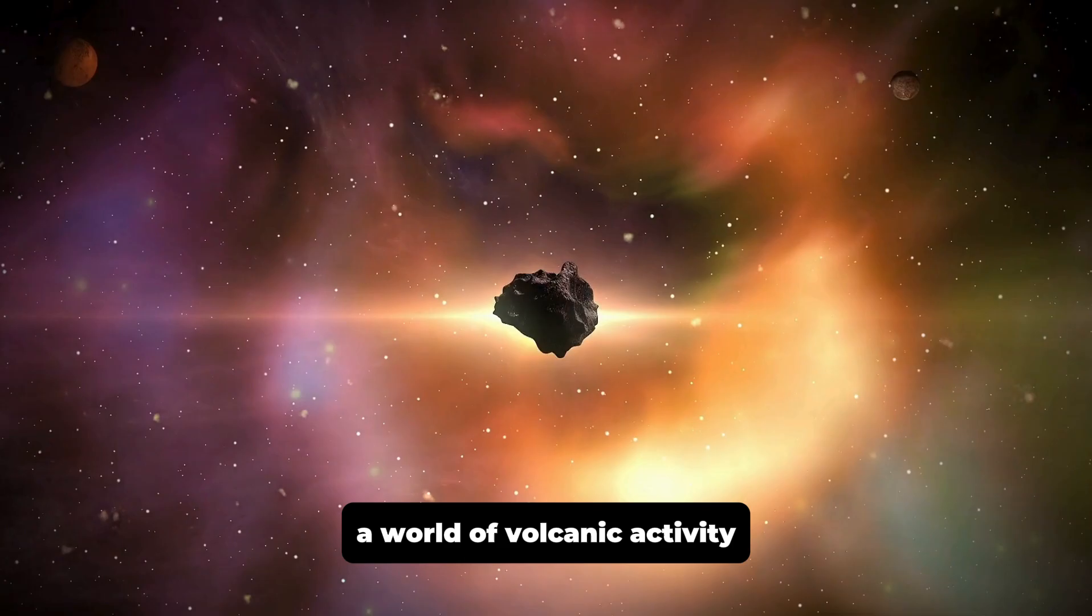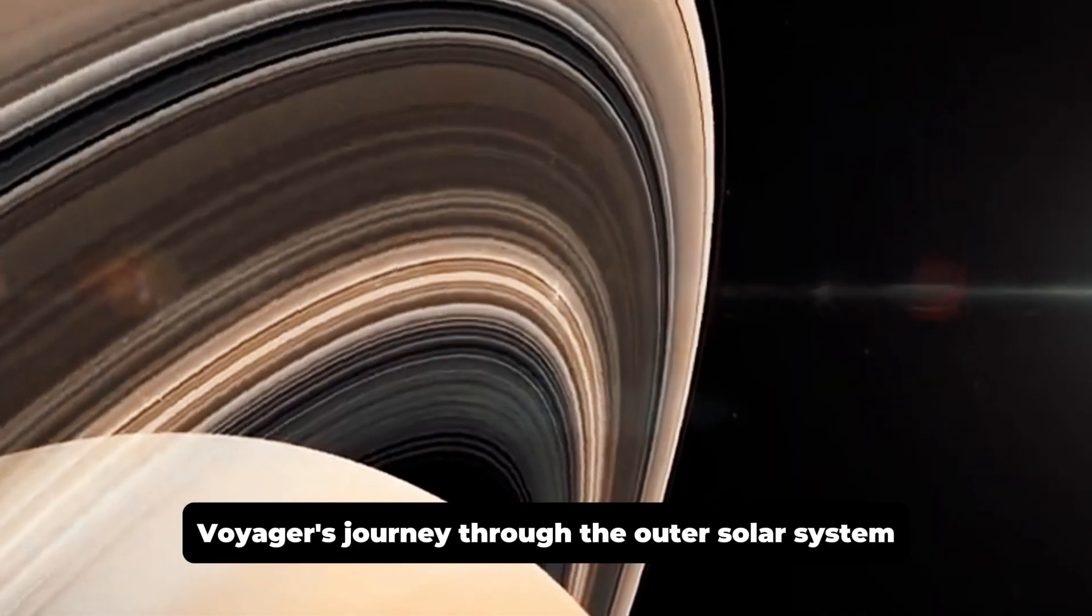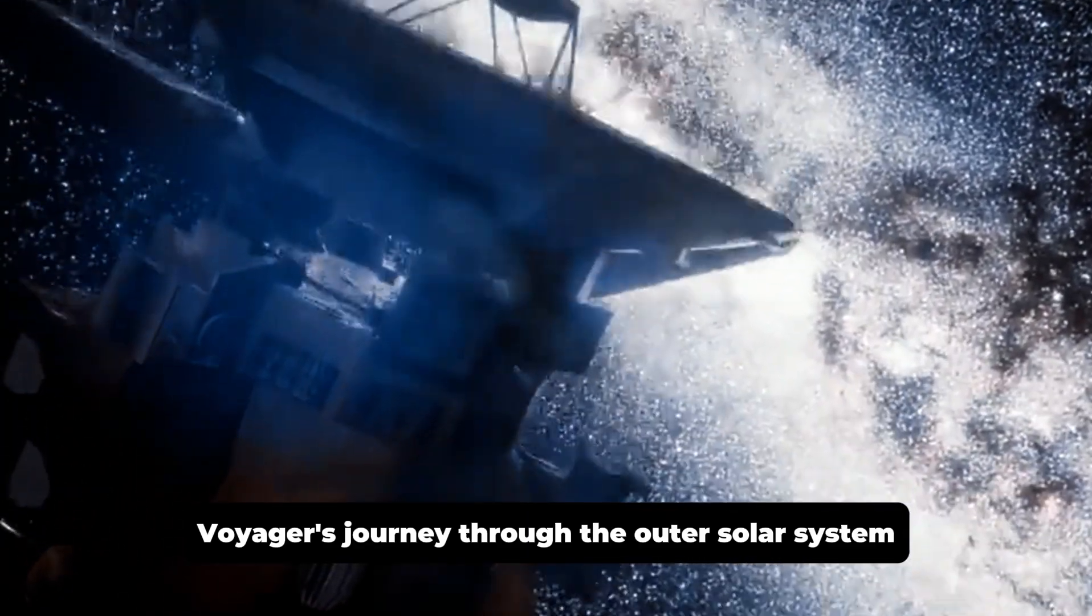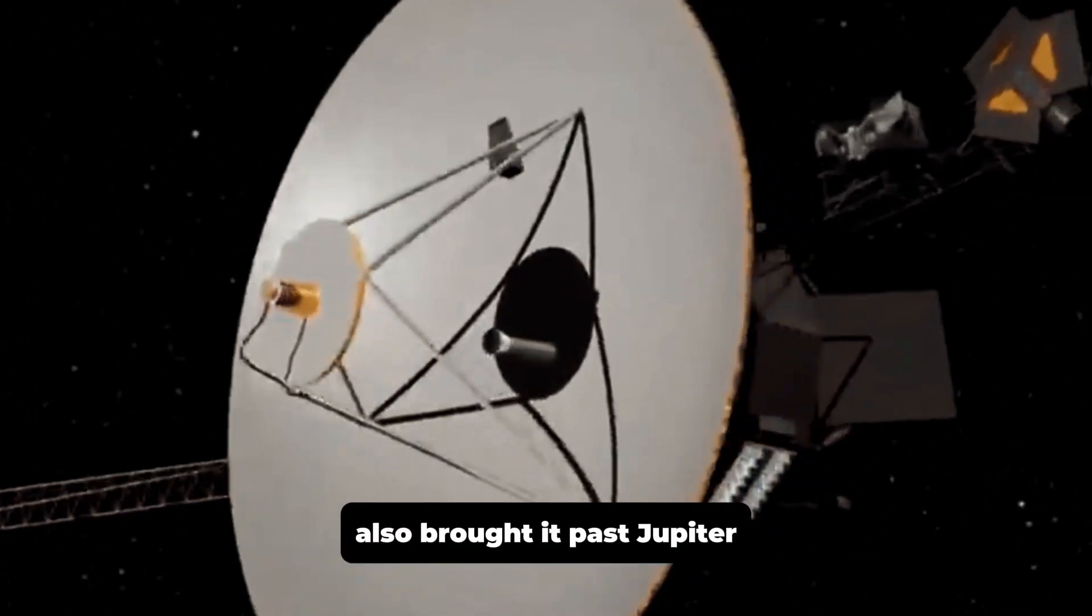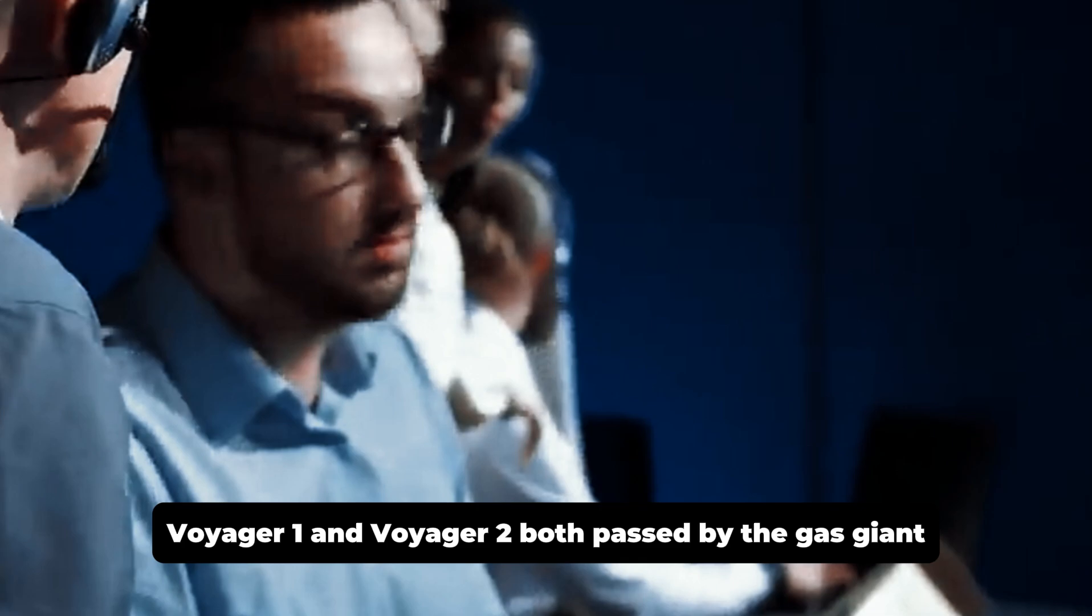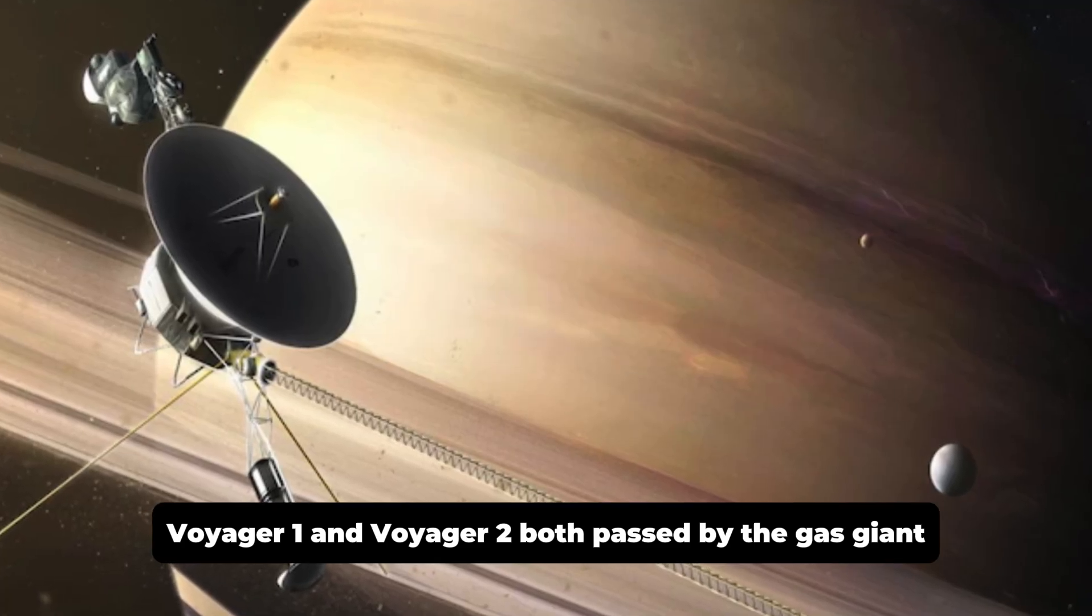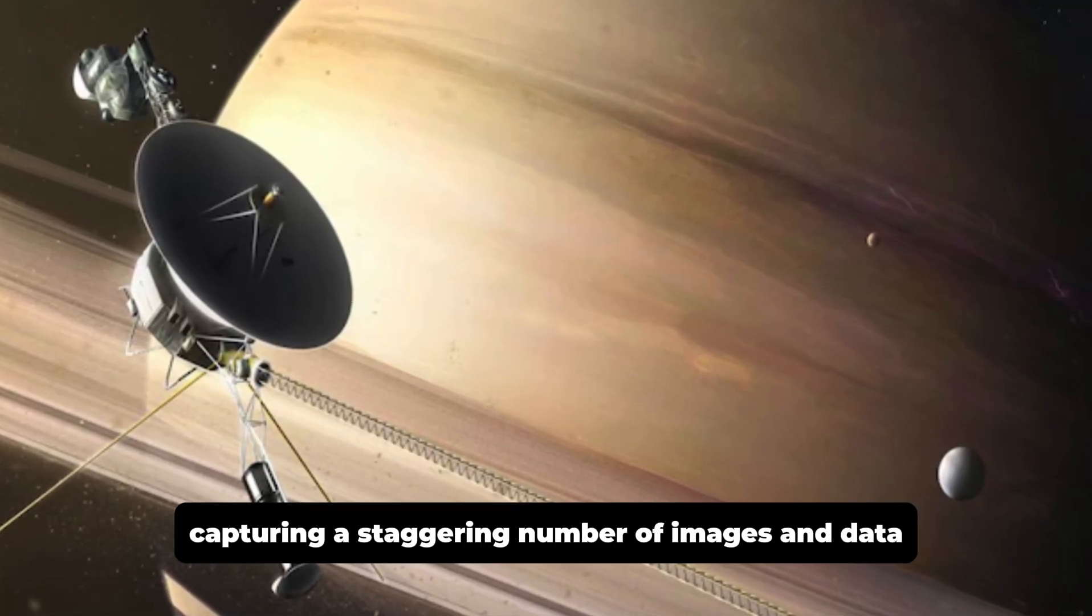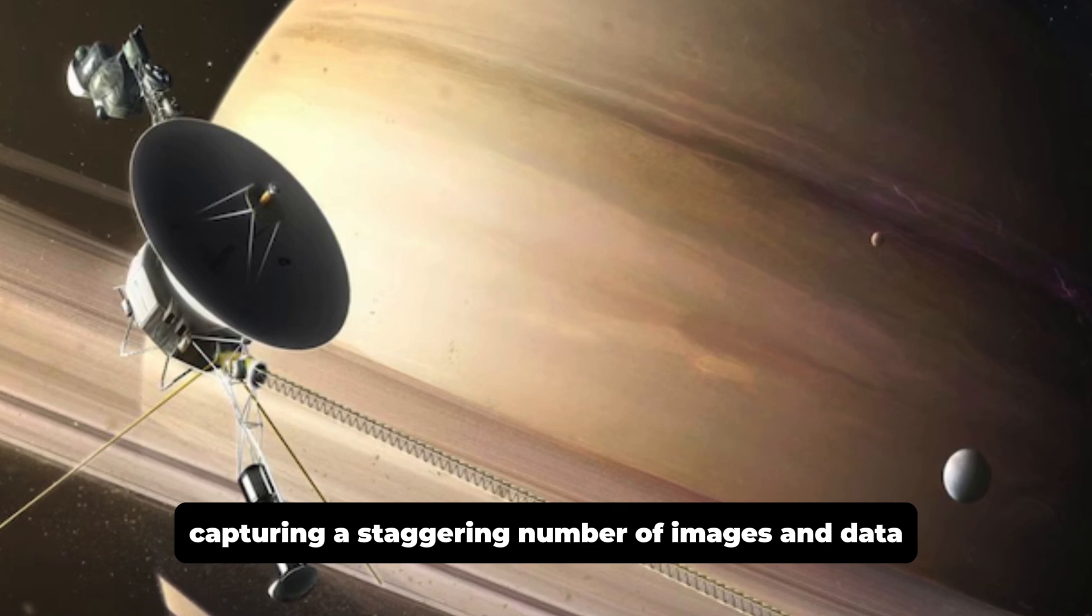Voyager's journey through the outer solar system also brought it past Jupiter, the largest planet in our solar system. In 1979, Voyager 1 and Voyager 2 both passed by the gas giant, capturing a staggering number of images and data.